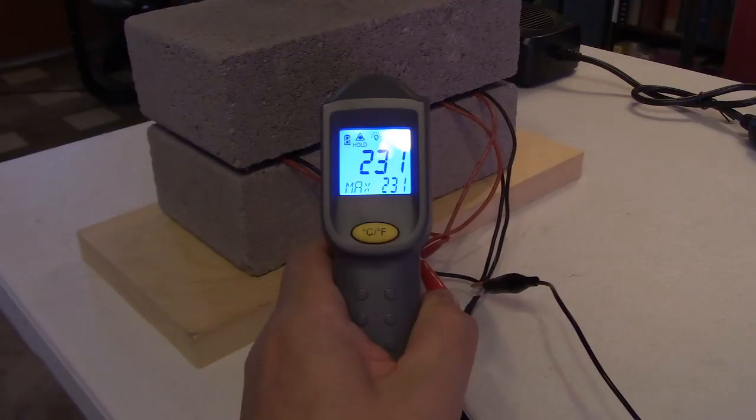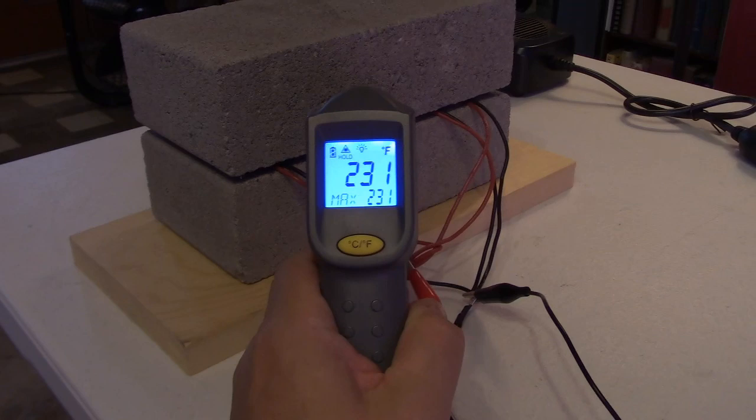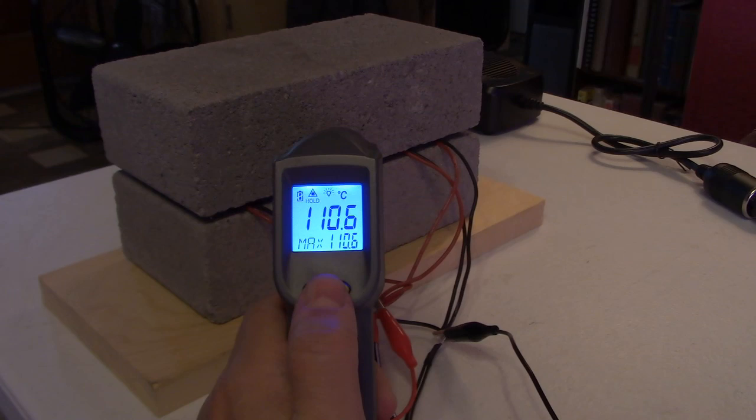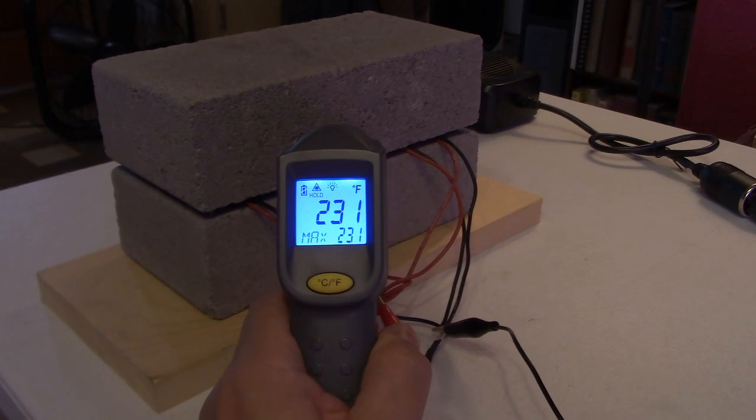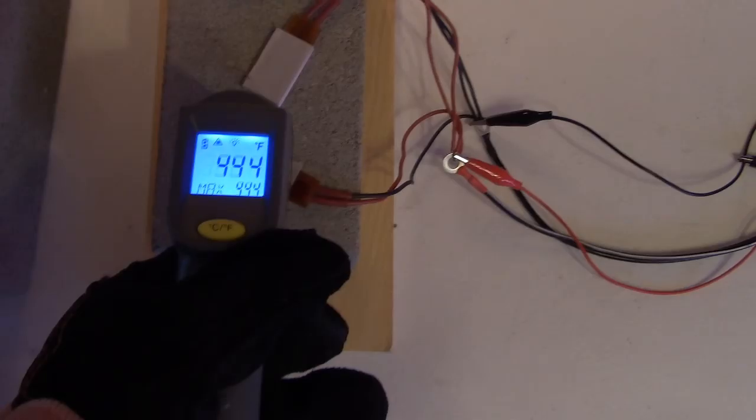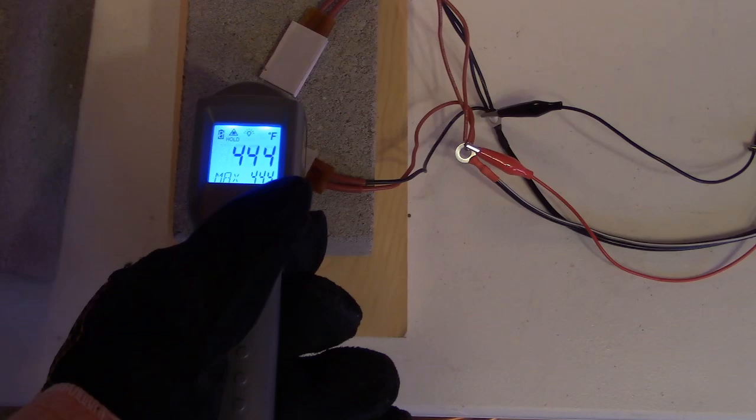Holy smokes, over 110 Celsius. Again, that element can get to over 400, so it's not surprising that bricks are getting hotter. There's your element temperature, 444 Fahrenheit, 228 Celsius.